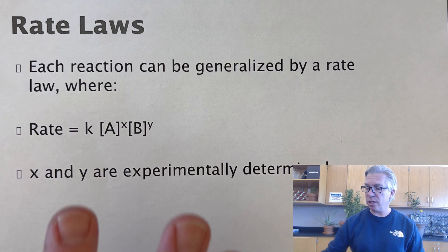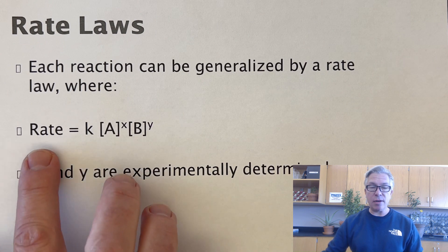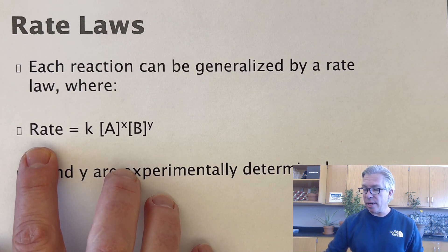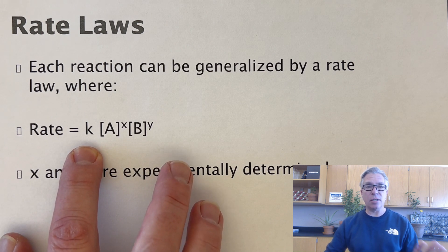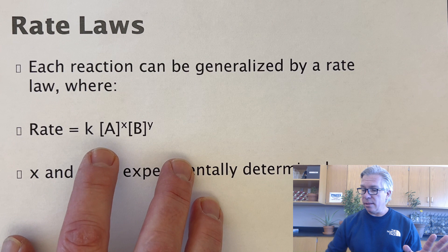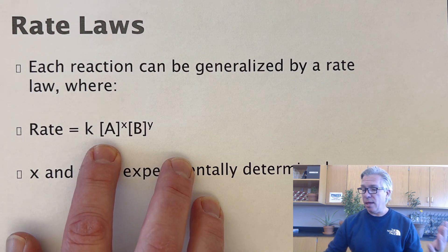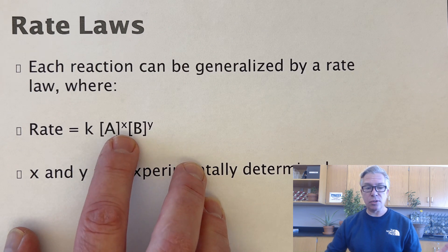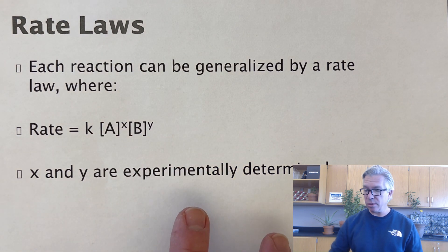Each reaction can be generalized by a rate law, where the rate is equal to a constant — which is unique to every reaction under every set of conditions — times the concentration of reactant A and the concentration of reactant B, raised to certain exponents, which are called orders.